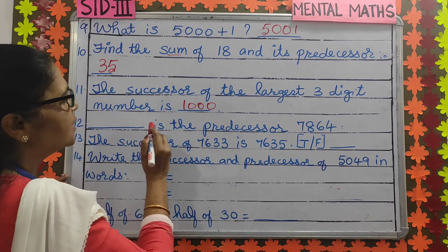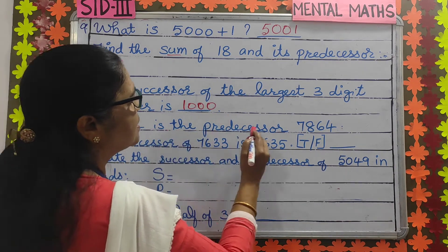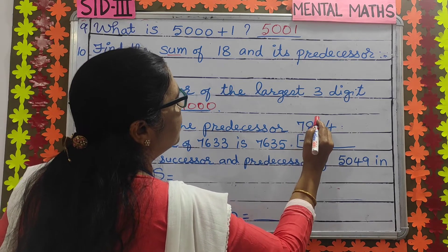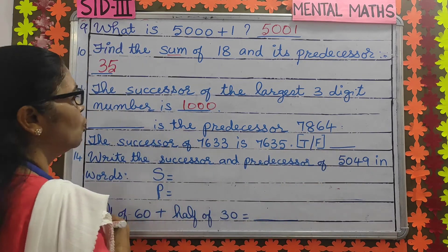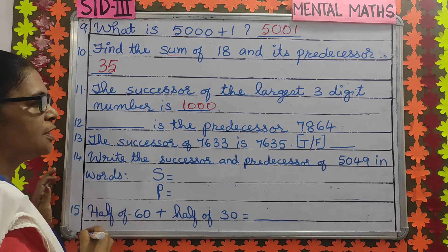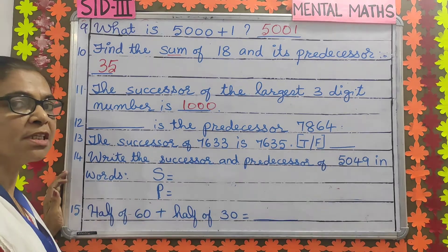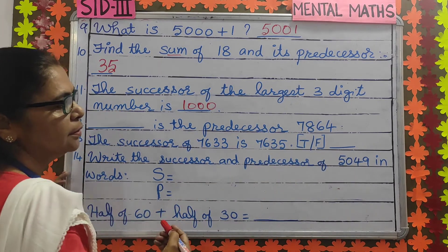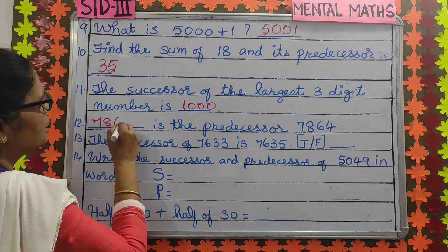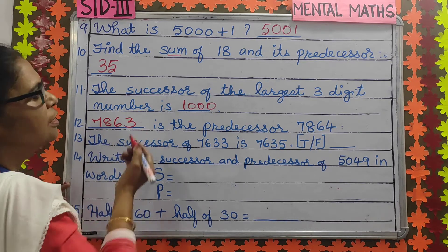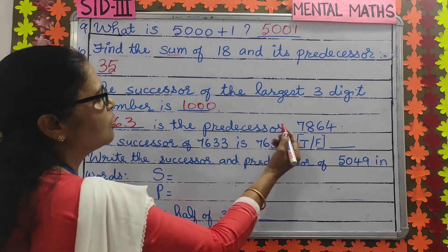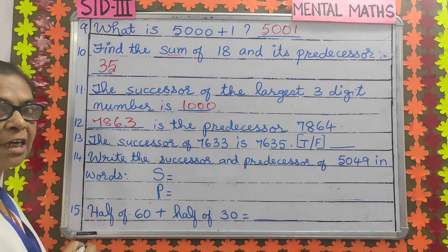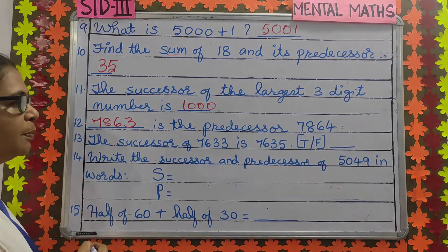Number 12: what is the predecessor of 7,864? Predecessor means just before the number. The predecessor of 7,864 is 7,863.